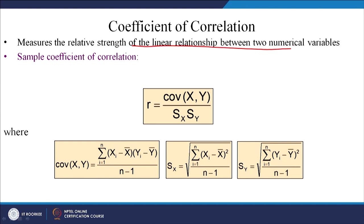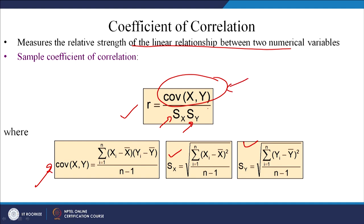To avoid this problem, there is one more measure called the coefficient of correlation. It measures the relative strength of the linear relationship between two numerical variables. To calculate it, take the covariance value and divide by the standard deviation of both datasets. First calculate covariance, then calculate standard deviation of X and Y, then divide covariance by the product of the standard deviations — and you get the coefficient of correlation.